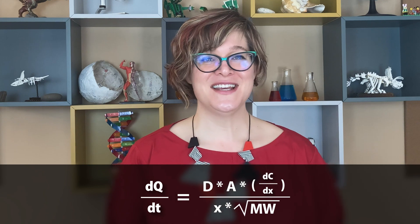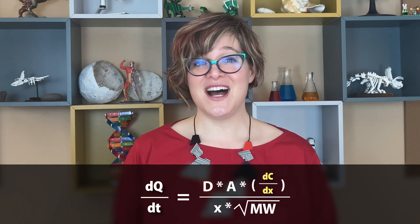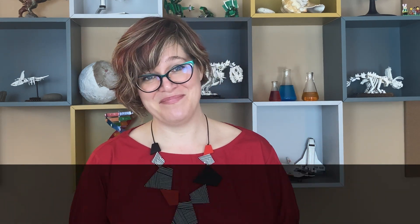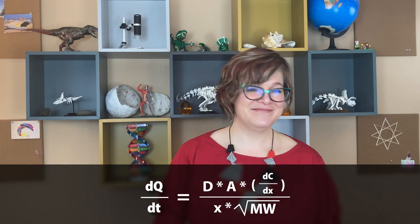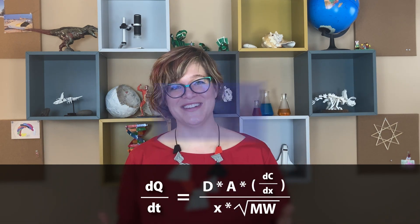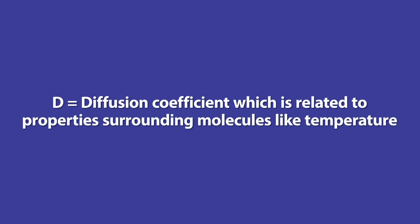Diffusion is affected by several environmental factors: temperature, distance, molecular weight, concentration gradient, and the area that the molecules have to move around in. The diffusion coefficient D is related to the speed that an individual molecule moves. It makes sense that the faster the molecule moves, the faster diffusion is going to occur.